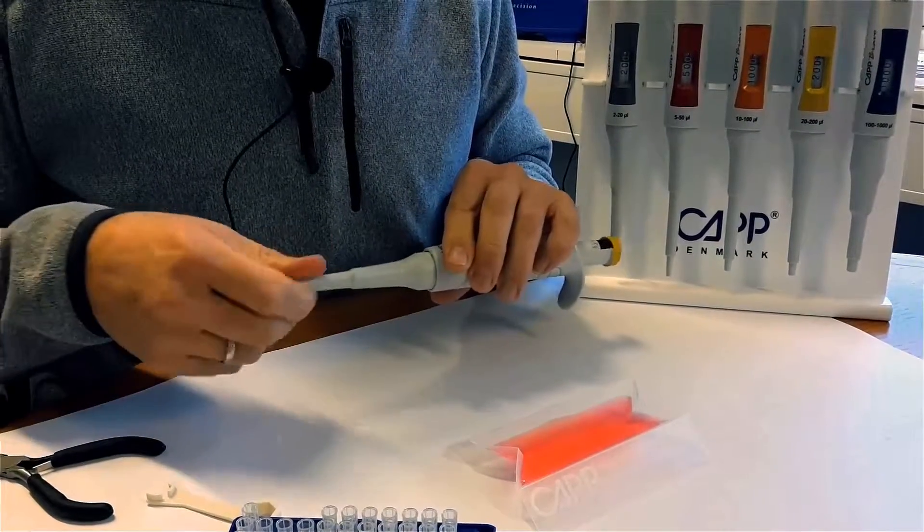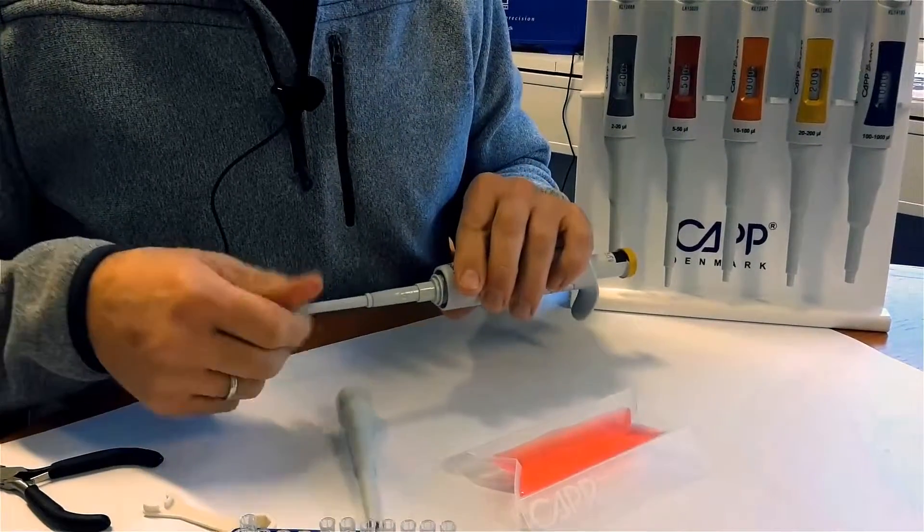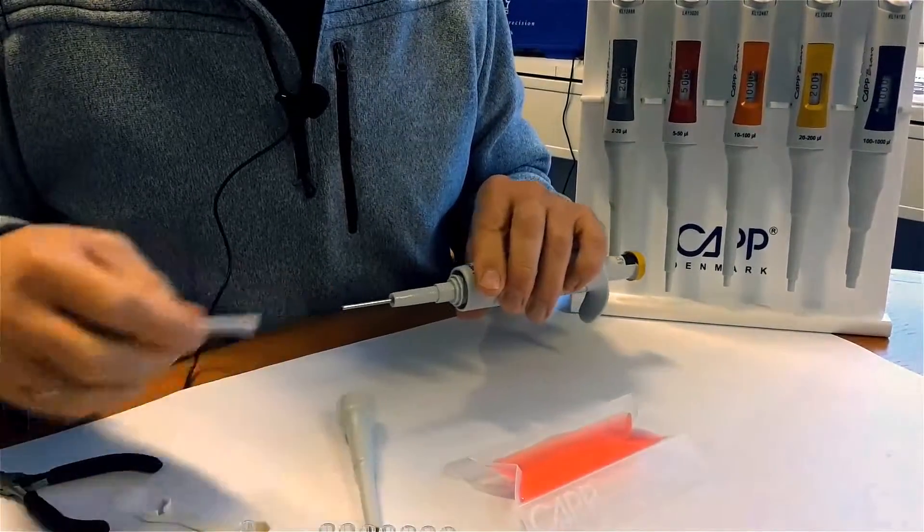Unscrew the tip cone lower part and you will access the piston. Perform a visual check ensuring that there is no sign of contamination or damage.